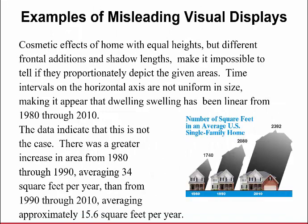Let's take one last look at this one here. An example again about misleading visual displays. You have the number of square feet in an average US single home. In 1980 it was 1740. In 1990, it was 2080. And then by 2010, we're saying that the average square foot home was 2392. Cosmetic effects of home with equal height, but different frontal additions and shadow lengths make it impossible to tell if they proportionately depict the given areas. Time intervals on the horizontal axis are not uniform. For example, it goes from 10 years here and then to 20. So that's a big one.